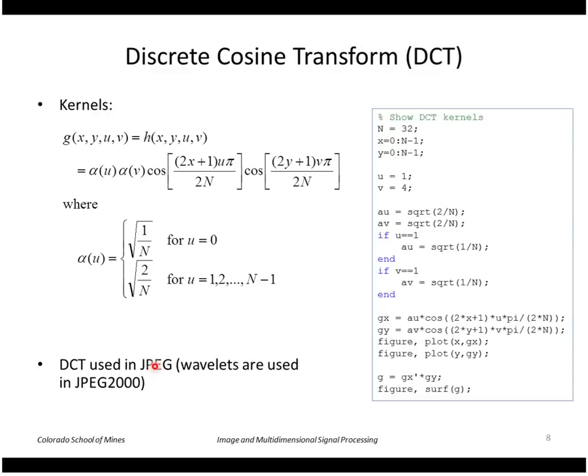This is used in JPEG, although not the newer version of JPEG 2000 which uses wavelets. To visualize this, I have a bit of code here that displays the basis functions, in this case 32 by 32, where I've chosen u equals 1 and v equals 4. This code simply implements the equations I've shown here.